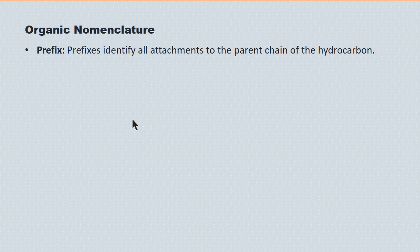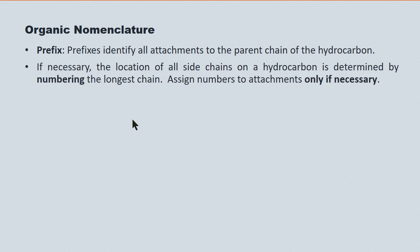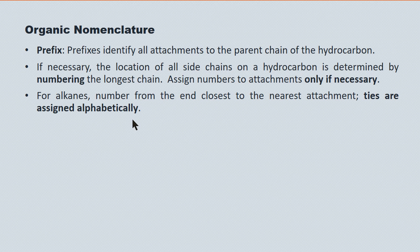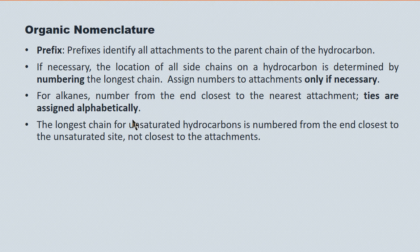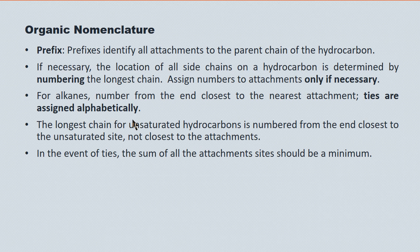Prefixes identify any attachments to the parent chain of the hydrocarbon. Quite often there can be uncertainty as to where they're located along that longest chain. Because of that, we have to come up with a numbering system that clearly identifies where they're located. We only assign numbers if necessary, and we count the longest chain from the end closest to the attachment. If there's a tie, the tie is assigned alphabetically. For unsaturated hydrocarbons like alkenes and alkynes, the longest chain is numbered from the end closest to the unsaturated site, not closest to the attachments. Should there be a tie, the sum of all attachments should be a minimum.